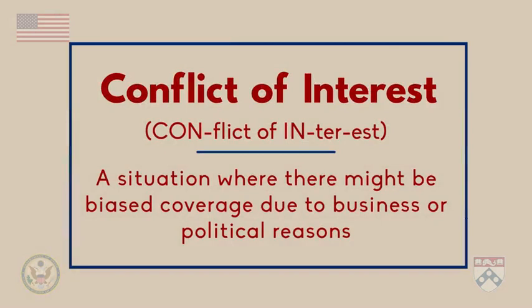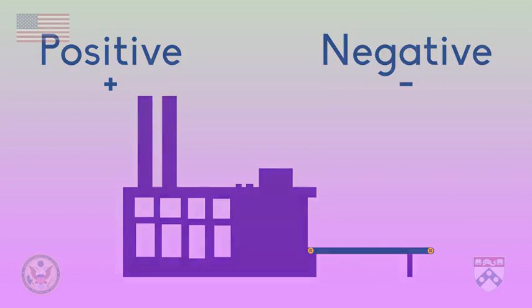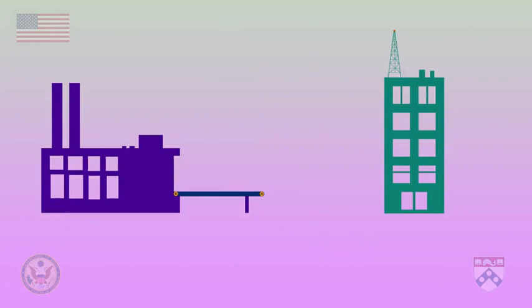Now that we've looked at two types of bias by omission, you might wonder why this situation happens. One reason is when media companies have a conflict of interest. A conflict of interest is a situation where there might be biased coverage due to business or political reasons. In this case, the job of the media companies is to publish objective stories. If there are positive and negative things about the new electronics factory, the media companies should publish both points of view. But maybe the new factory is a business partner with the media company, perhaps through buying advertising. If the media company publishes a negative point of view about the factory, it might damage their business relationship. Therefore, the media company might not do their job honestly, and we might see bias in their coverage of the new factory.